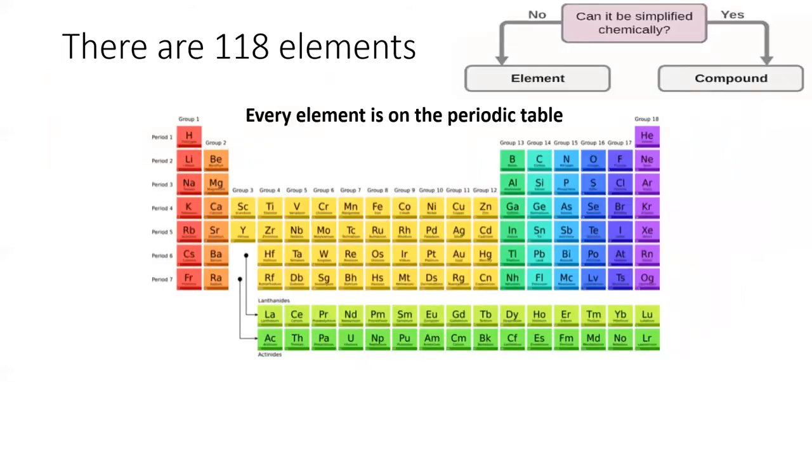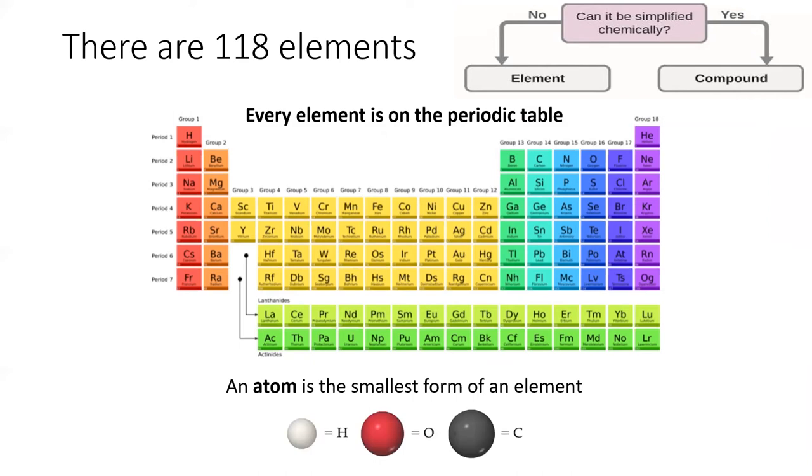Of the elements, there are only 118 in the universe, and every element is represented on the periodic table. The smallest form of an element is a single atom, which we often represent using colored spheres. Chemists have ways of separating mixtures and compounds into pure elements. For instance, by running current through water, we can separate the atoms of hydrogen and oxygen.